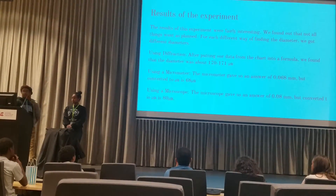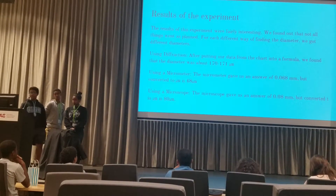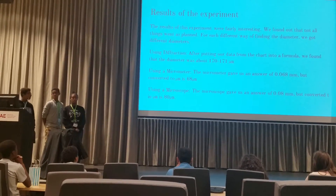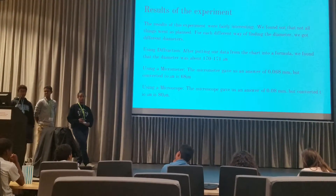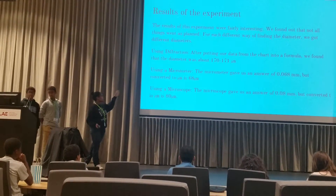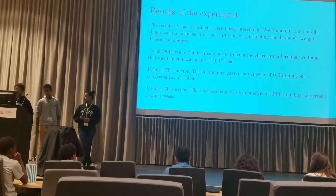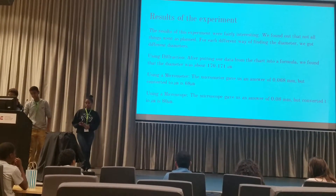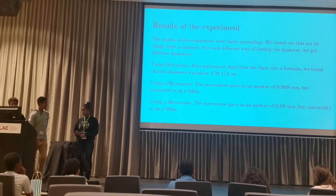The results of this experiment were fairly interesting. We found that not all things went as planned — for each different method of finding the diameter, we got different measurements. Using the laser and diffraction, we got between 170 and 171 micrometers. The results from the laser were a lot different from the micrometer and the microscope. For the micrometer, we got 68 micrometers, and for the microscope, we got 80 micrometers, which is different from all of them.